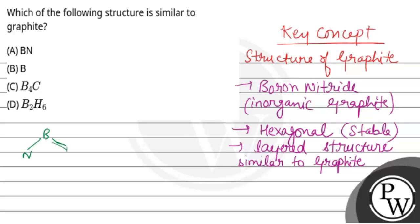BN double bond N, then B-N-B-N, B double bond N, then B-N-B-N double bond N, then B-N-B-N double bond N. This is how our boron nitride structure looks like - boron nitride.